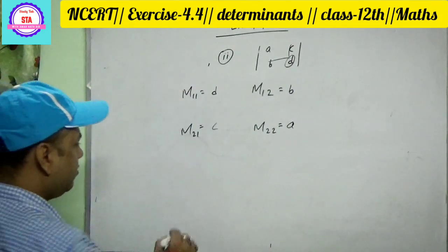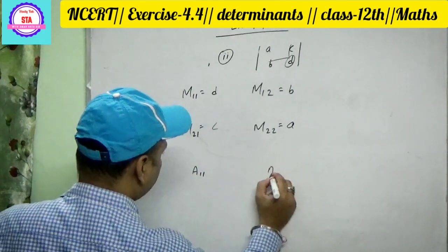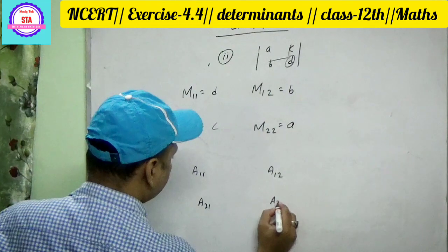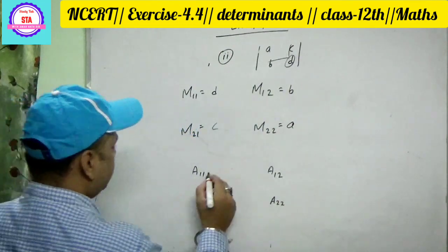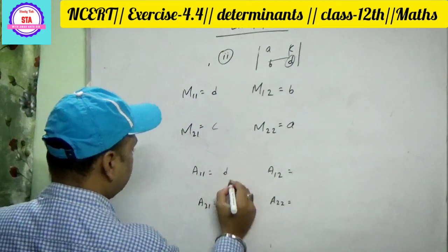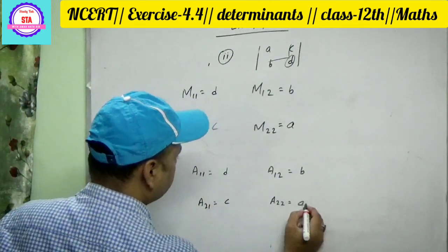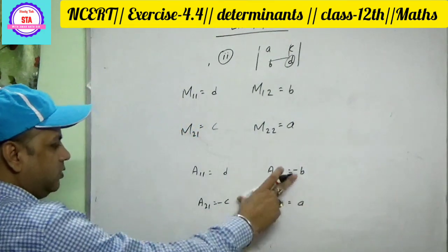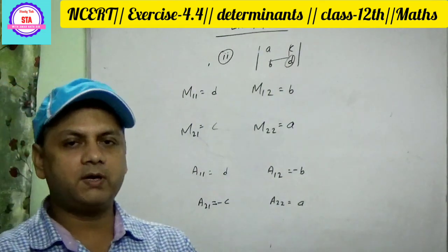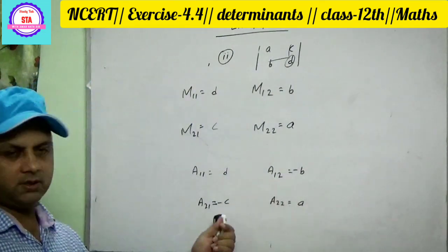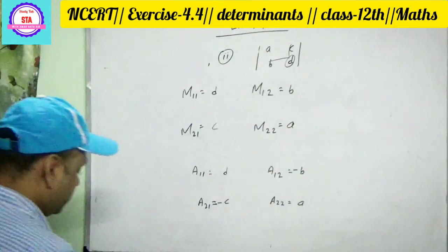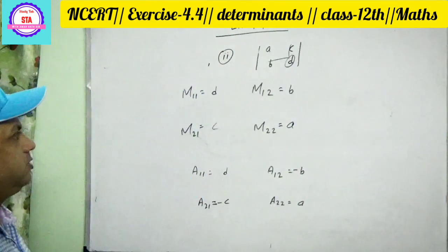This is the minor and cofactor. A11, A12, A21, A22 — these are the cofactor values. You can see this is a very easy question. Now we go to the next question.